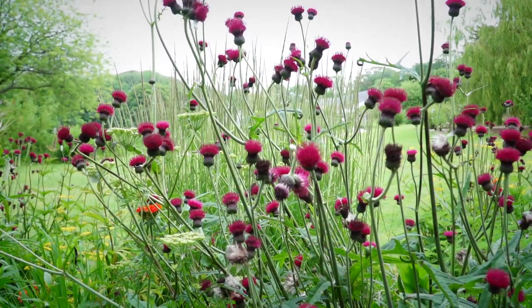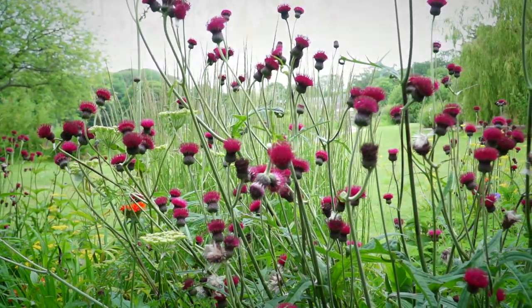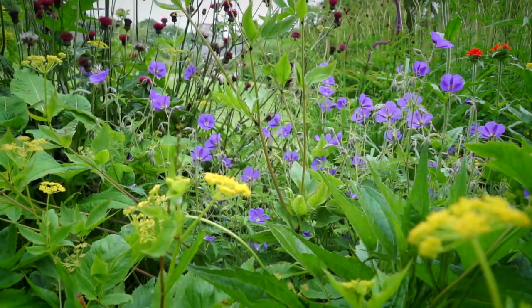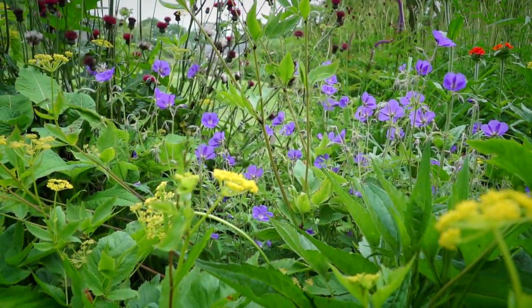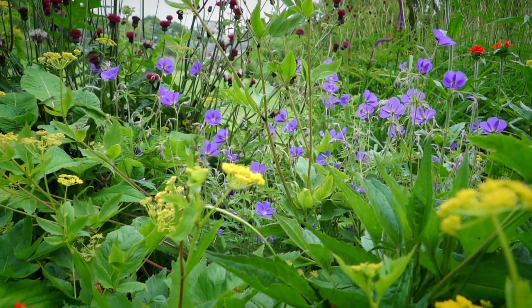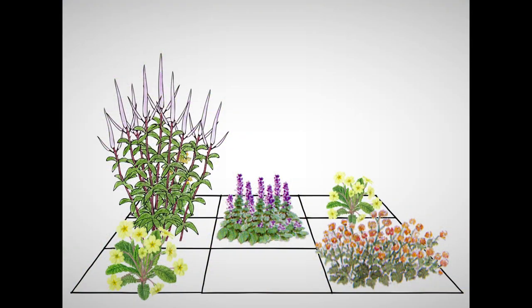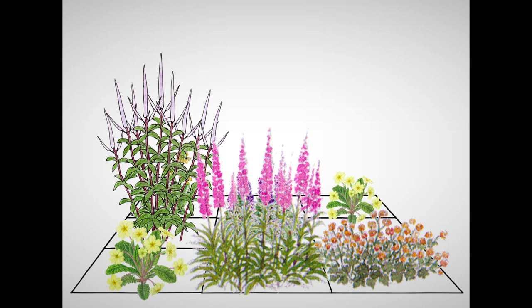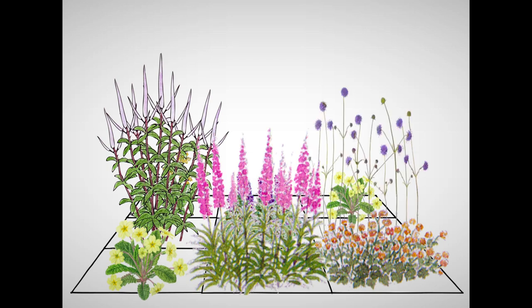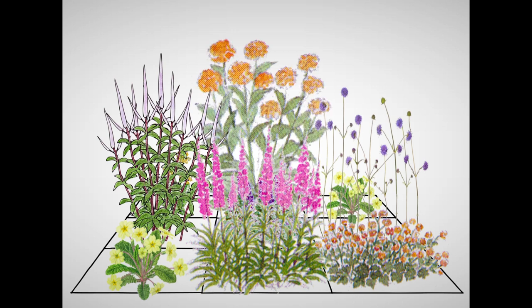Next, we choose a summer species — one early, one mid and one late flowering. So for this, we're going to plant one Veronicastrum virgatum, one Lythrum virgatum, one Succisa pratensis. Finally, we choose one autumn flowering species: one Rudbeckia subtomentosa.